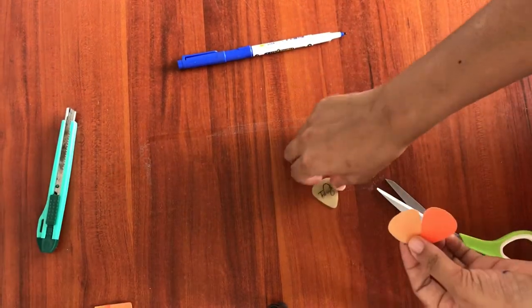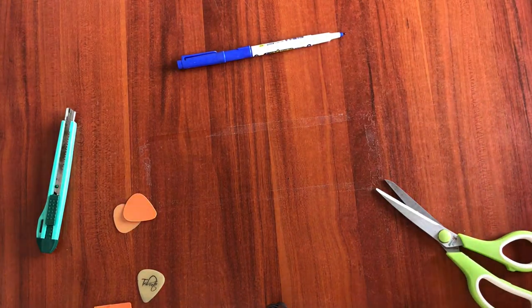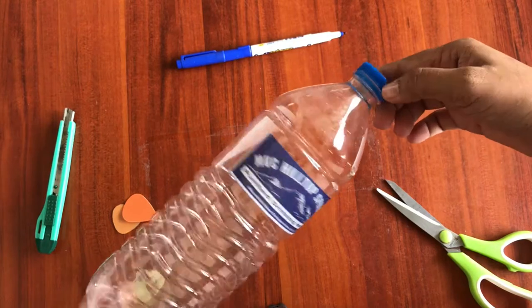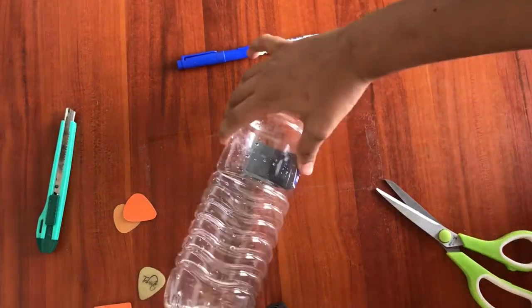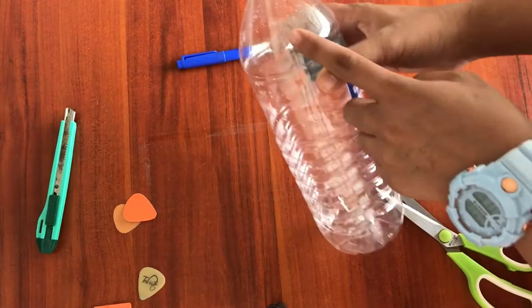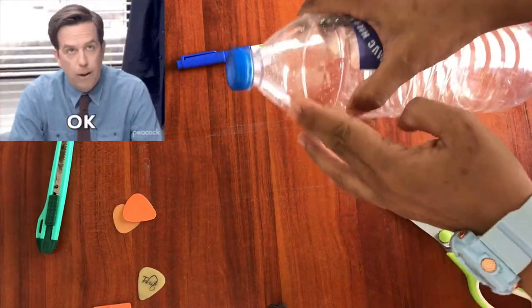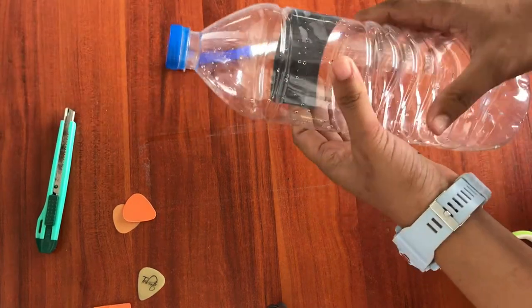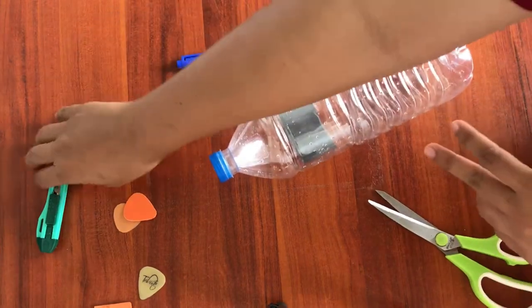Now let's make another one. Now we are going to turn this into a pick. You want the hard portions of the bottle, so here is the hard portion and here is a little bit soft. First, we are going to cut it.